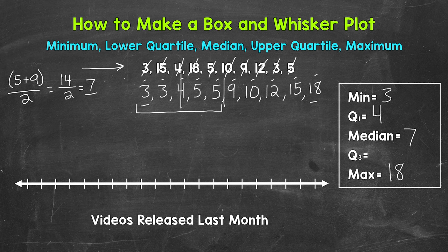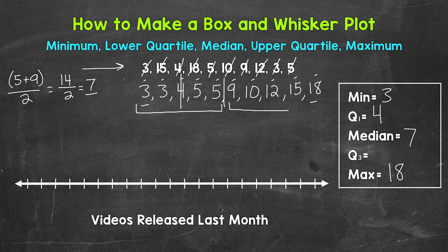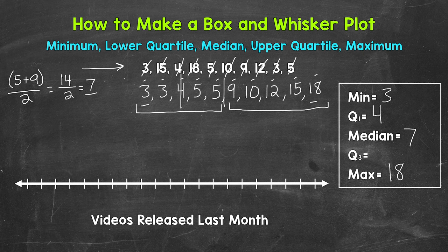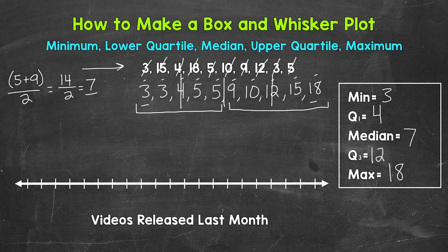Now let's find the third quartile, also called the upper quartile. This is the 75% or three-fourths point within the data, the 75th percentile. The third quartile is going to be the median or halfway point of the upper half of the data. There are five numbers here as well, so two numbers on each side. The third quartile is 12.